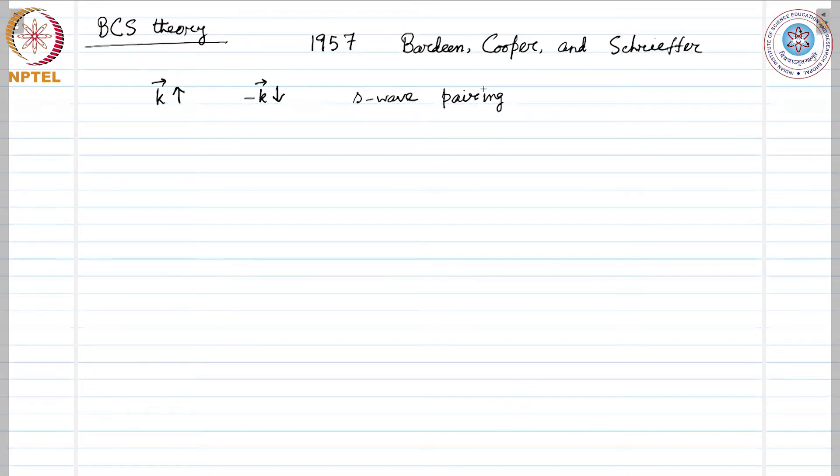The penetration depth and the coherence length emerge as natural consequences of the BCS theory. The London equation is obtained for magnetic fields that vary slowly in space. Thus, the central phenomenon in superconductivity, the Meissner effect, is obtained in a natural way.